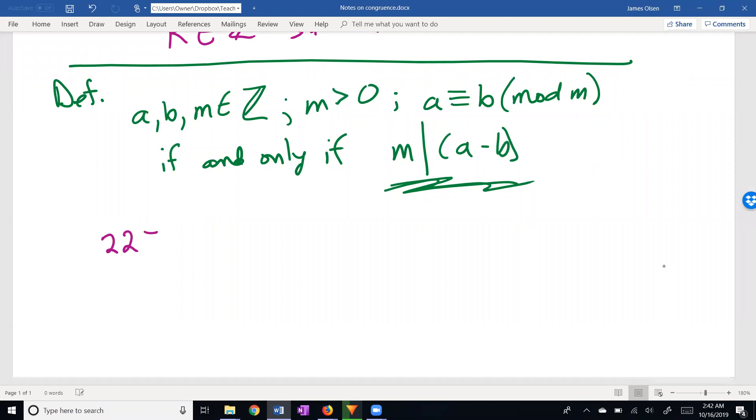Let's look at some examples. 22 is congruent to 15 mod 7. Why do we know this? Because 7 divides 22 minus 15. 7 divides 7.